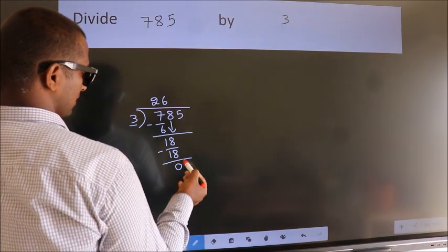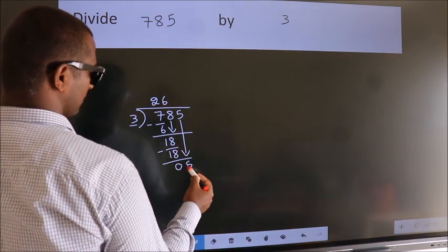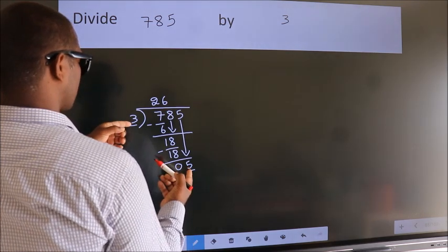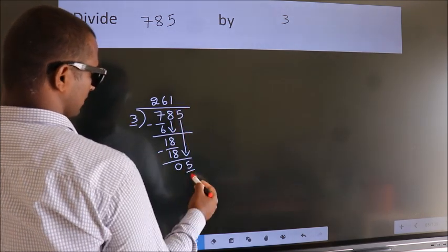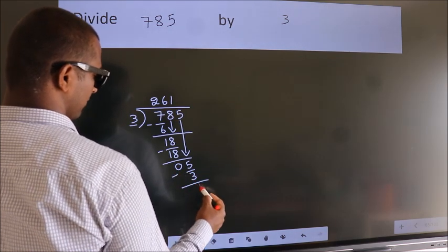After this, bring down the beside number. So, 5 down. So, 5. A number close to 5 in the 3 table is 3 times 1, which is 3. Now, we subtract. We get 2.